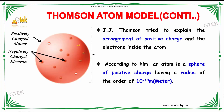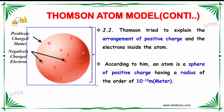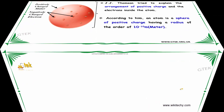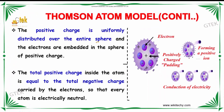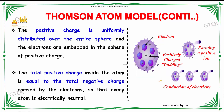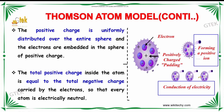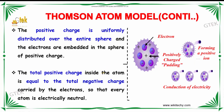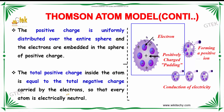According to Thomson, an atom is a sphere of positive charge having a radius of the order of 10 power minus 10 meter. The positive charge is uniformly distributed over the entire sphere, and the electrons are embedded in this sphere of positive charge. This takes care of conducting electricity, forming a positive ion. The positive charge inside the atom is equal to the total negative charge carried by the electrons.